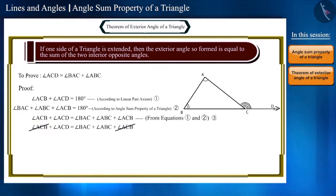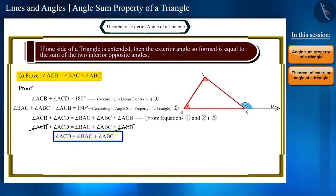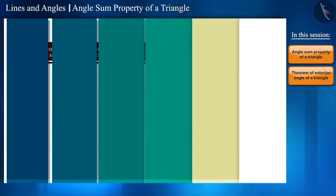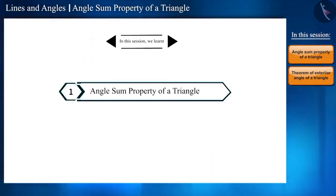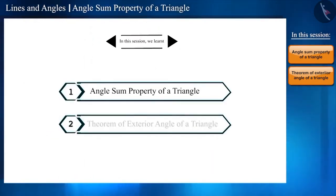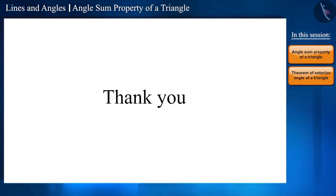Angle ACB appears on both sides of equation three, so we can cancel it from both sides. This gives us: angle ACD equals angle BAC plus angle ABC, which is exactly what we had to prove. So the second theorem is also proved. Today we studied the angle sum property of a triangle and the theorem of exterior angle of a triangle. In the next video we will solve some questions based on these theorems. Thank you.